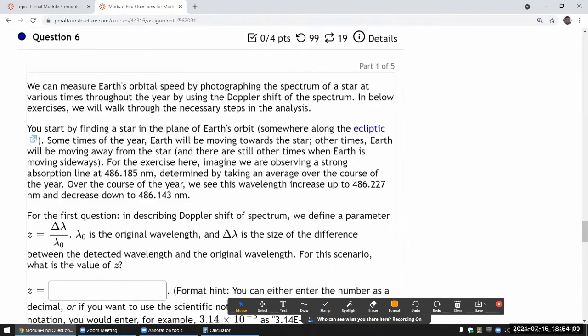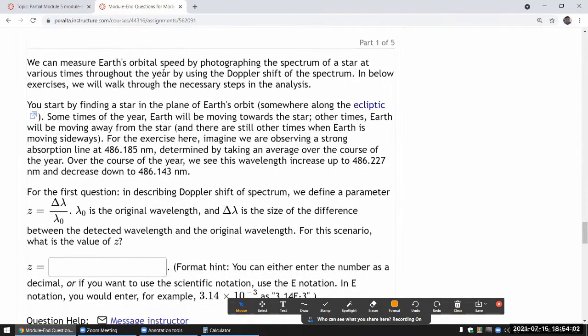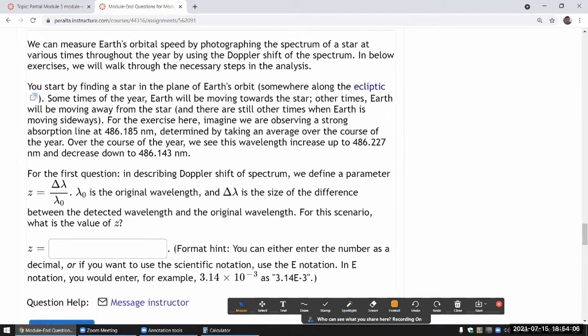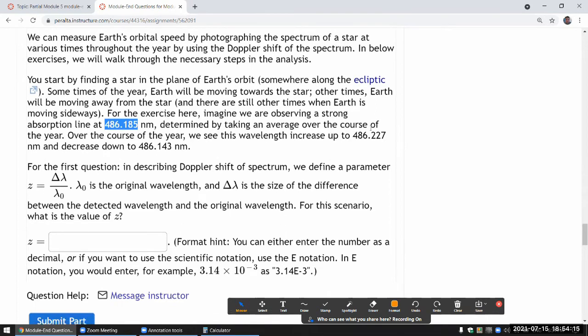So let's go through this step by step. It says you start by finding a star, and for the exercises here, imagine we are observing a strong absorption line at this. And this number is randomized, your thing might be different, determined by taking an average over the course of the year. And this is the description of Doppler shift.